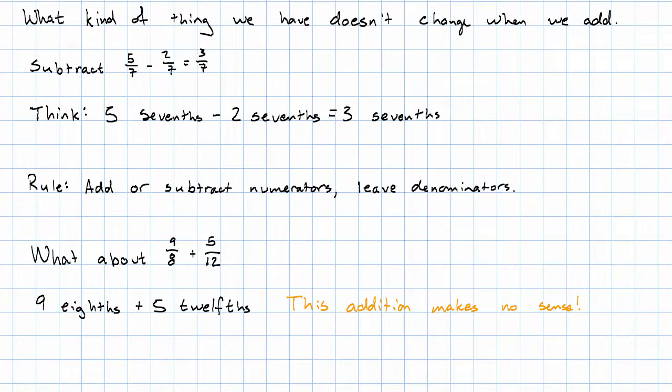But it does make sense to take the quantity 9 eighths and the quantity 5 twelfths and put them together. It does make sense to combine these. If I had 9 eighths of a pound of something and 5 twelfths of a pound of something, I could put them on the scale together and weigh it.